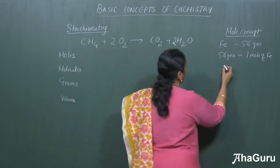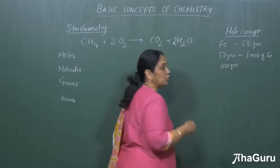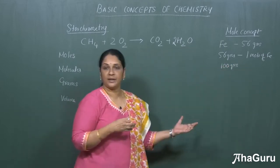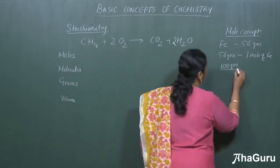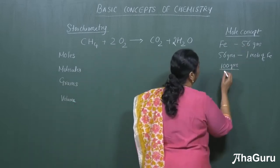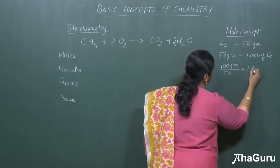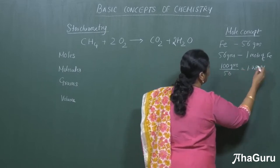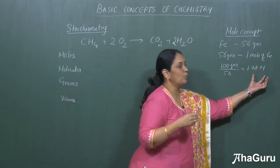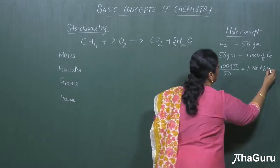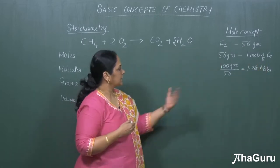Now suppose I give you 100 grams of iron. You can't just say '100 grams' — you have to convert this into moles. The formula is: given weight divided by atomic weight. The atomic weight of iron is 56, so 100 divided by 56 is approximately 1.78 moles of iron. This is how we express a chemical element.